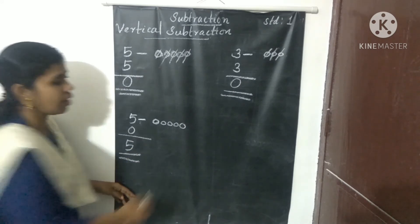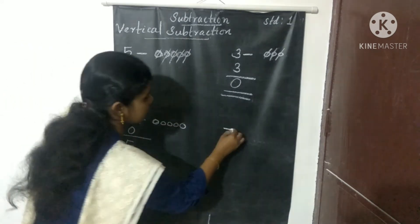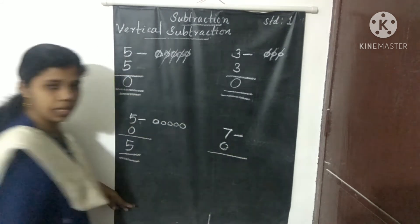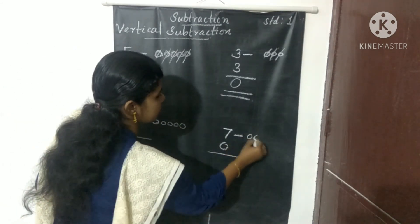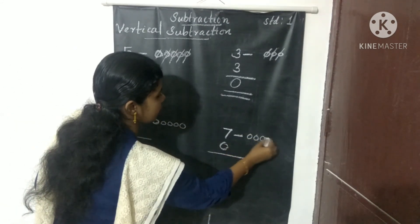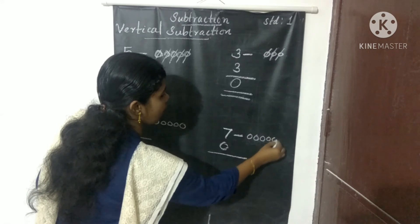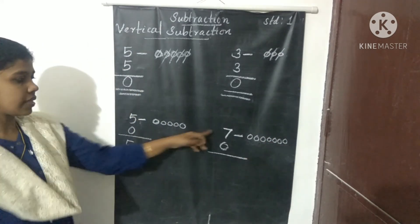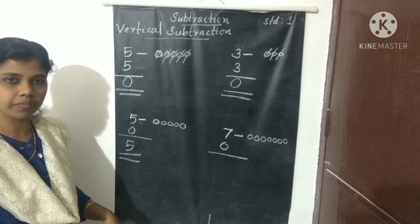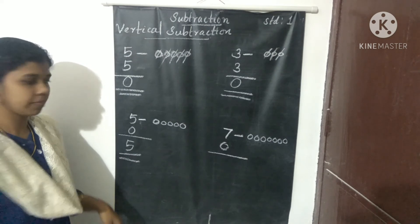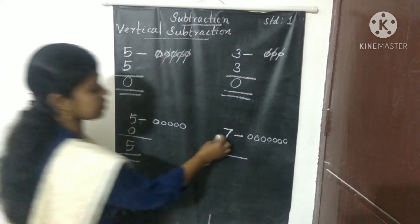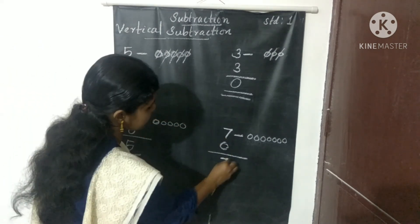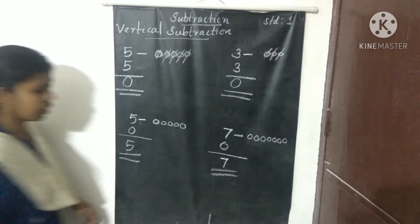What is 7 minus 0? Draw 7 beads: 1, 2, 3, 4, 5, 6, 7. Zero taken away — the answer is the same number. 7 minus 0 equals 7.